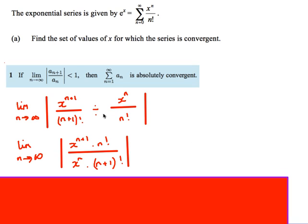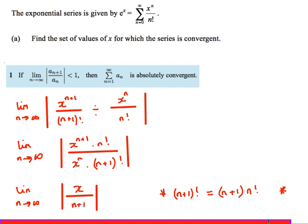If I simplify this fraction by flipping and multiplying, I have x^(n+1) on the top and x^n on the bottom, so those cancel. I've also used the fact that (n+1) factorial is the same as (n+1) times n factorial, so the n factorials cancel out as well. All that's left is the limit as n approaches infinity of x over (n+1).